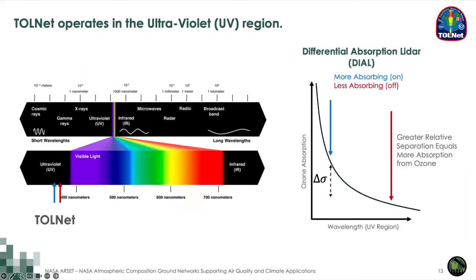The next step in understanding lidar and DIAL is determining which wavelengths or colors of light to use. We want TOLNet to measure in both day and night conditions and to be absorbed by ozone. The left panel shows the electromagnetic spectrum zoomed into the ultraviolet region. Radiation from the sun falls off drastically below about 300 nanometers, making this an ideal region for TOLNet to operate without additional contamination from solar background radiation. Most TOLNet lidars operate between 266 and 300 nanometers during the day.